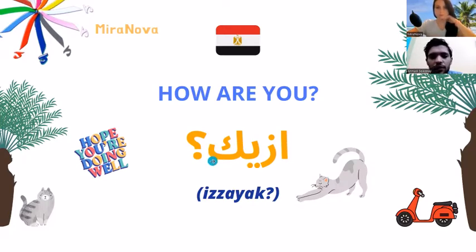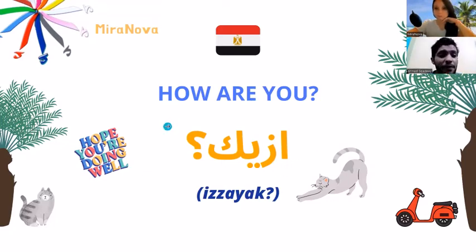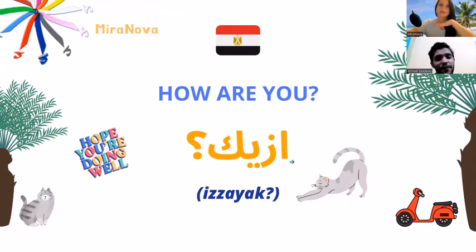So if I'm talking to a lady or woman, I say 'izzayik'. How you doing, Mira? 'Izzayik'. And if I'm talking to Ahmed, a man, I say 'izzayak'. You can say 'izzayak' to Ahmed, and 'izzayik' to Mira.